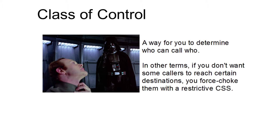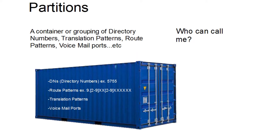So what we're talking about today is class of control. What is that? It's basically a way for you to determine who can call who — it's basic permissions for the telephony world. In other terms, if you don't want some callers to reach certain destinations, you force choke them with a restrictive CSS. Within Call Manager, class of control is implemented via partitions and calling search spaces.